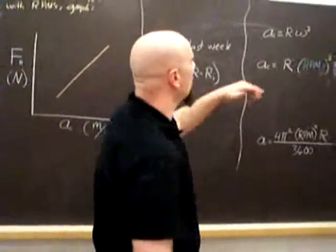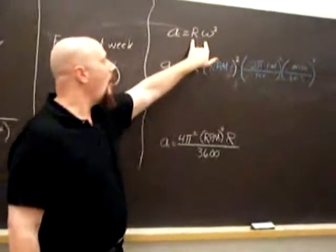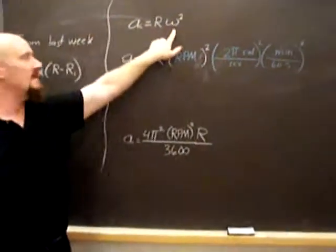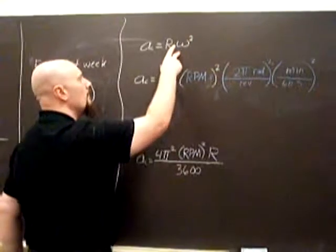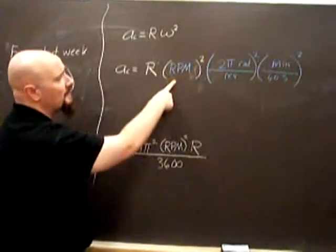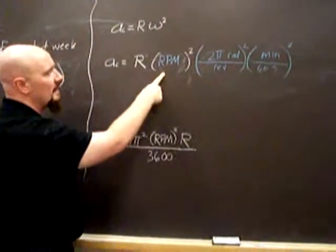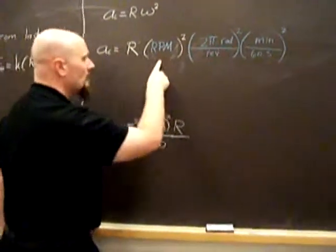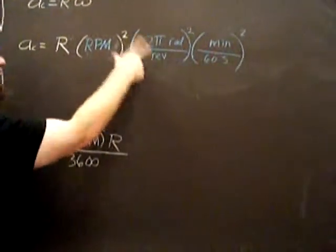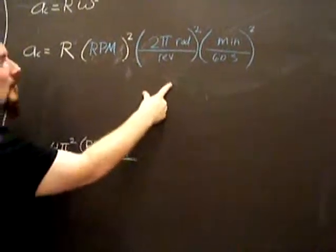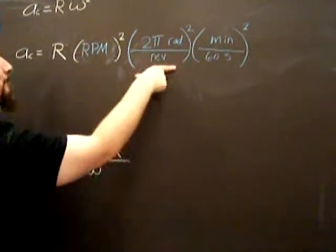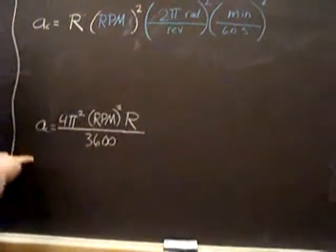And for centripetal acceleration, we consider R times omega squared, where omega is the radial velocity. But as we said, the frequency we're going to have is in RPMs, so we have to do some converting to get to SI. Well, there's two pi radians per revolution, got to square that. One minute per 60 seconds, got to square that. And then you'll get your conversion to this.